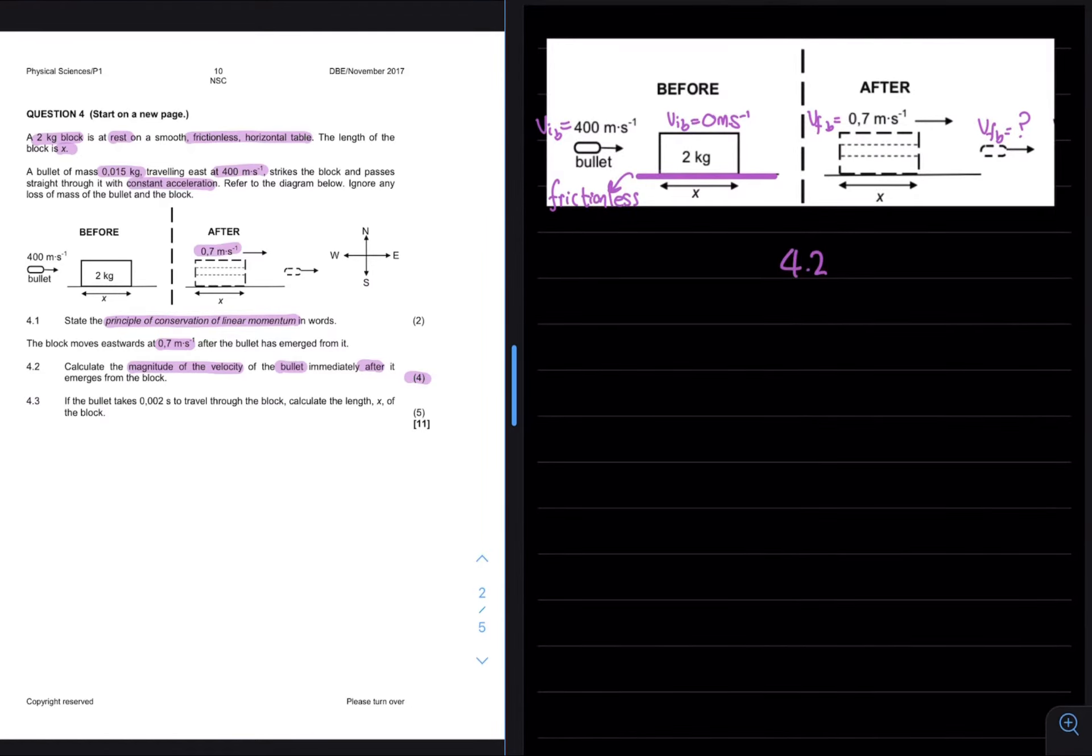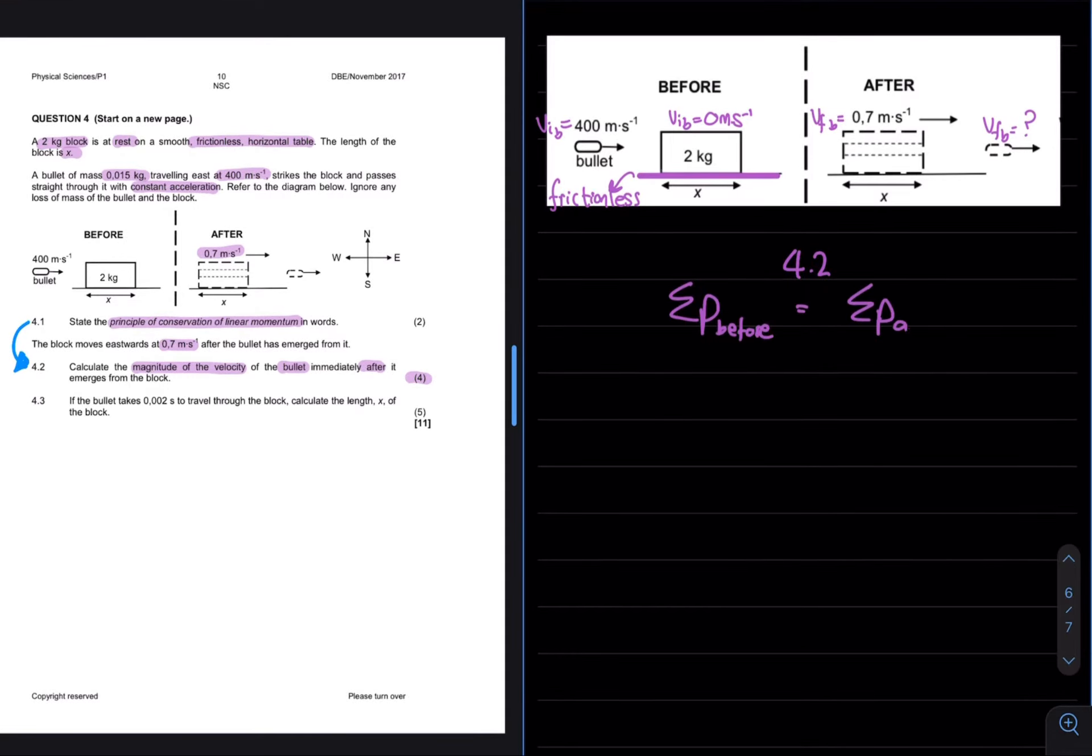Seeing as we were asked in 4.1 to state the principle of conservation of linear momentum, it is an indication that would be the principle we use in the following question. Therefore we can apply the principle of conservation of linear momentum to solve the velocity. Before the collision we have the mass and the velocity of the bullet, as well as the mass and the velocity of the block.